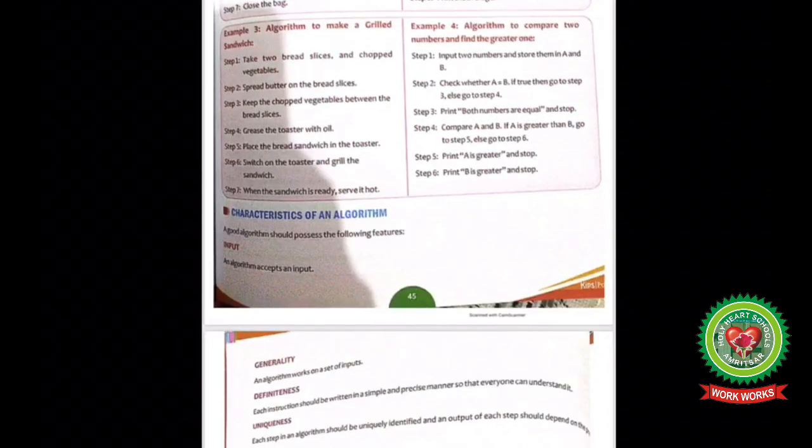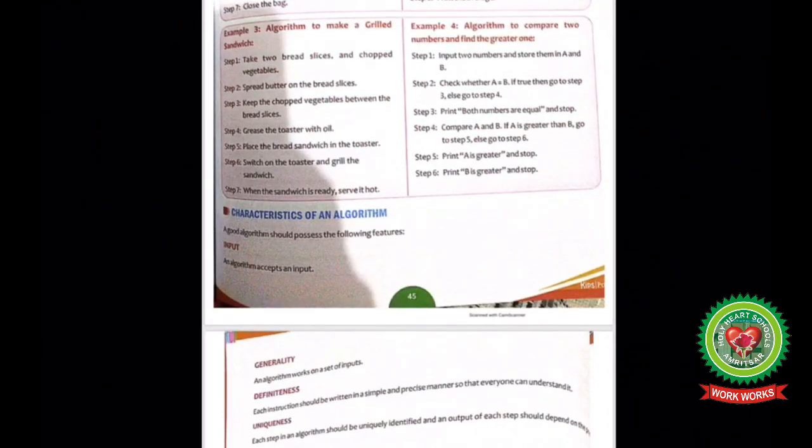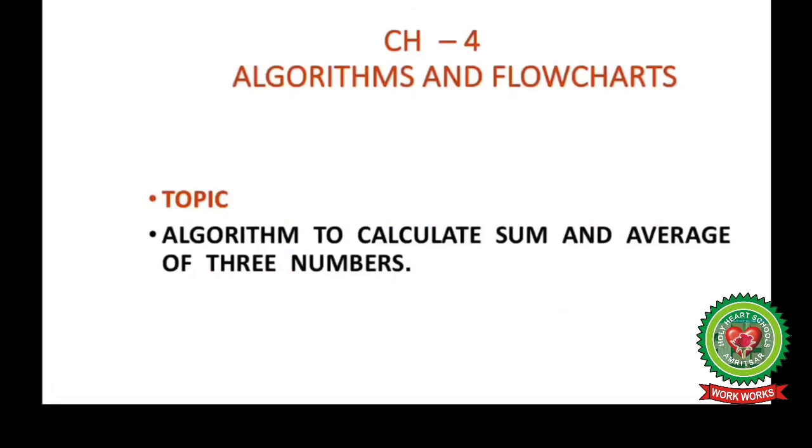In the previous class, we discussed characteristics of an algorithm with an example. Today we will discuss an algorithm to calculate the sum and average of three numbers.